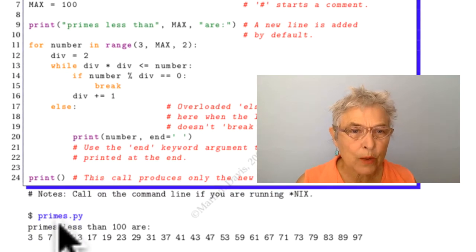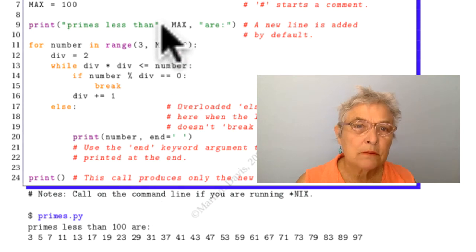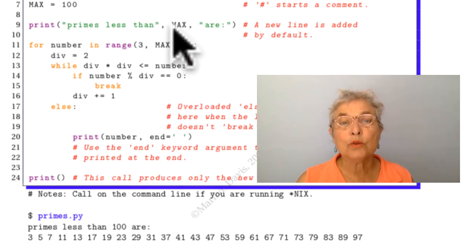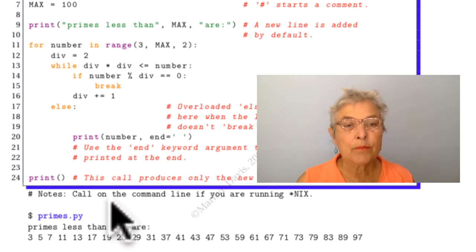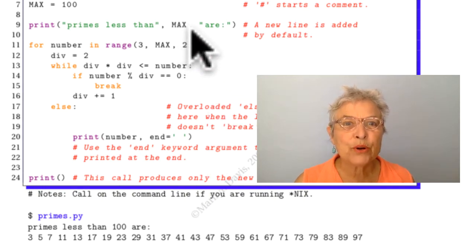Here we're running it. Primes less than comes out. And that comma which separates the objects produces the space. So max becomes 100. Our colon comes out. All of these lovely little spaces. That's our first print.